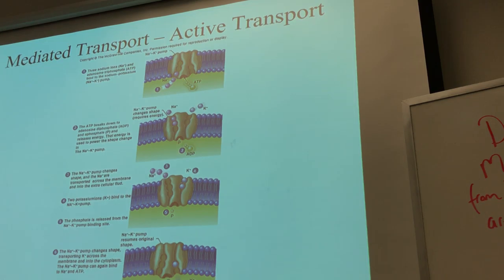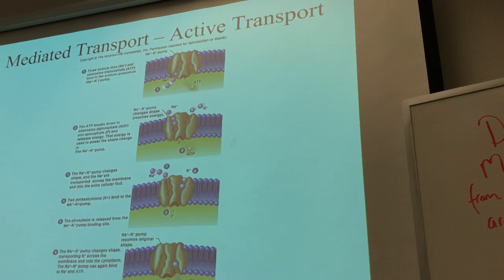Think of it like biking downhill — it's easy, going with the flow, going with the concentration gradient. You don't need to put energy in when running downhill. But biking uphill — you go to the lowest gear possible, and depending on the hill, it takes a lot of energy. That's what's happening when you're going against a concentration gradient. You're going against that natural flow, and in order to do that, you need to put in a lot of energy in the form of ATP.